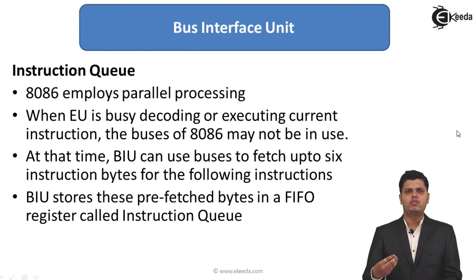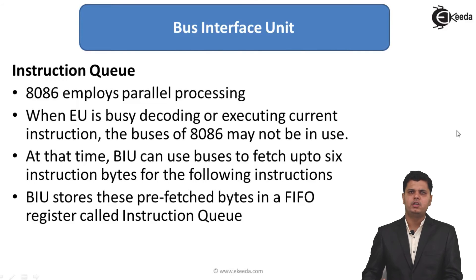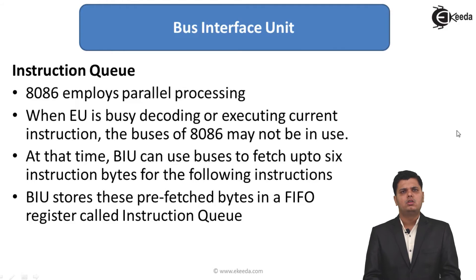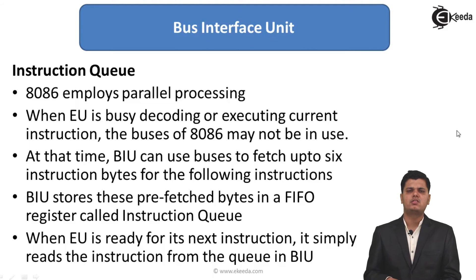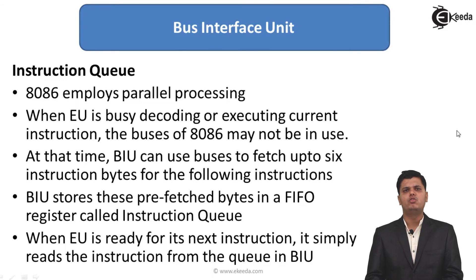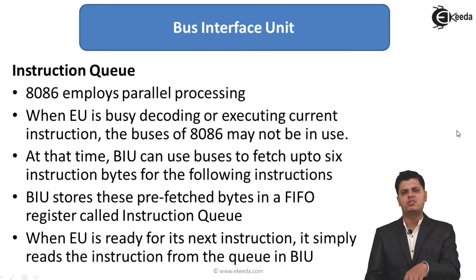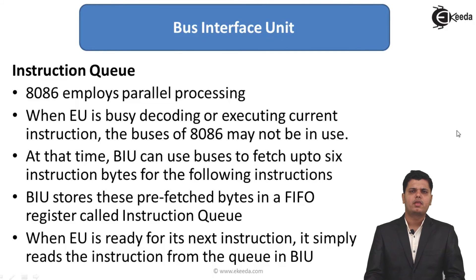The instruction queue operates as first-in, first-out (FIFO) — whatever instruction comes first is provided to the execution unit first. When the first byte of an instruction is provided, the next further bytes are loaded into the instruction queue. When the execution unit is ready for its next instruction, it simply reads from the queue. The bus interface unit extracts the information from the instruction queue and the execution unit takes the instruction from there.